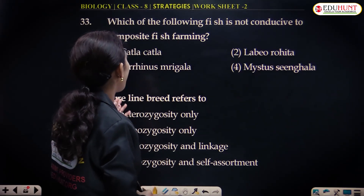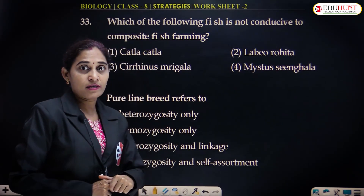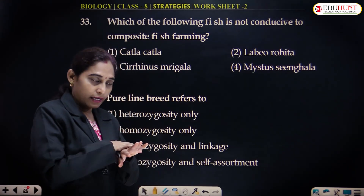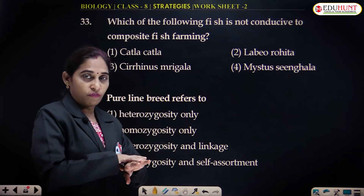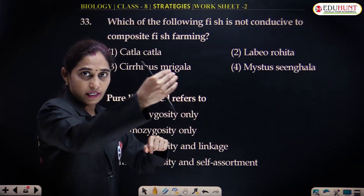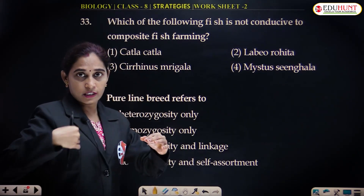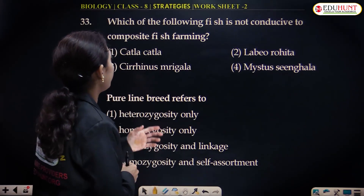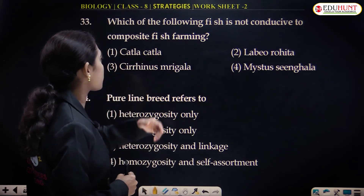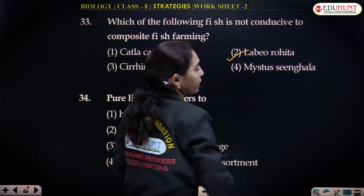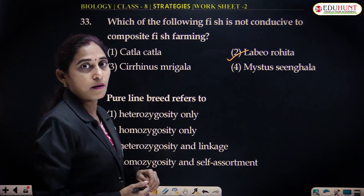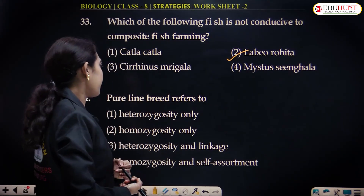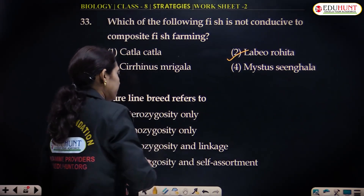Composite fish farming is done in a single pond or lake where one category of fish feeds on the upper layer, the second category feeds on the middle layer, and the third feeds at the bottom level. The fish that is not conducive to composite fish farming is Labeo rohita, the rohu fish, which is a middle feeder. Pure line breed refers to homozygosity only.